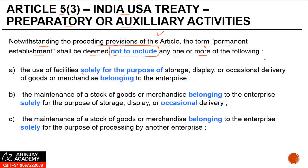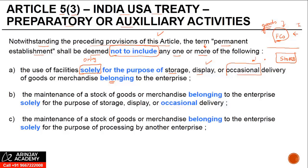The use of facilities solely — which means only; if you are using them for some other purpose, the exemption is not available — for the purpose of storage, display, or occasional delivery of goods or merchandise belonging to the enterprise. So if there is a foreign company and it has a place in India where it stores, displays, or occasionally delivers goods or merchandise which belong to this enterprise. The goods should belong to the foreign company. If it is selling goods from here for someone else, a third party, then this exemption is not available. But if you are doing this for your own goods or merchandise, the exemption is available and such an activity is not going to result in a PE.